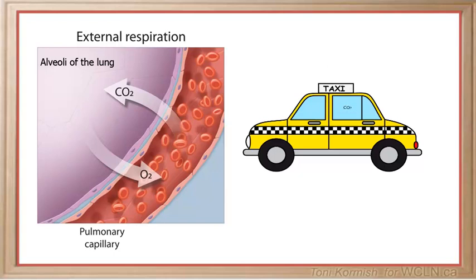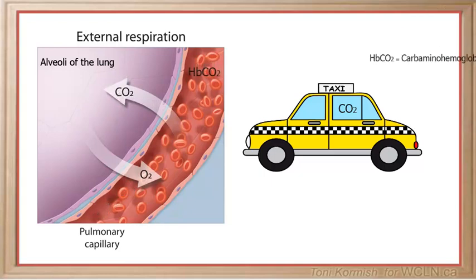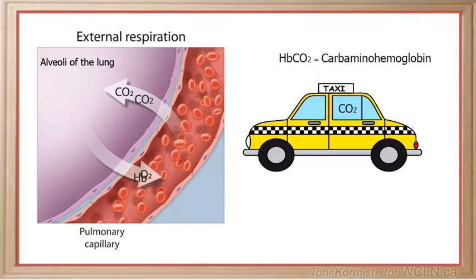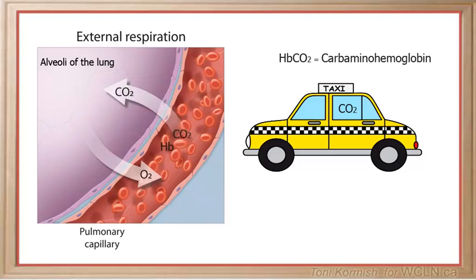Another passenger carried by hemoglobin is carbon dioxide. When hemoglobin binds to carbon dioxide, a compound called carbaminohemoglobin is formed. Carbaminohemoglobin is delivered to the lungs where the carbon dioxide is released from the hemoglobin molecule and diffuses out of the bloodstream into the alveoli so that it can be exhaled.